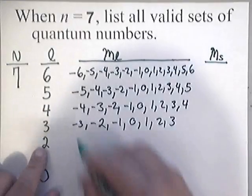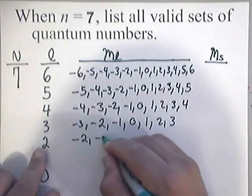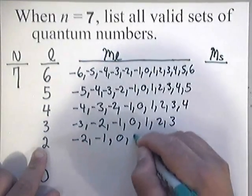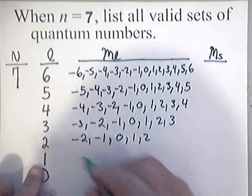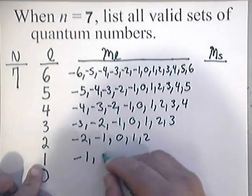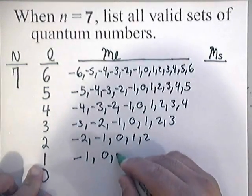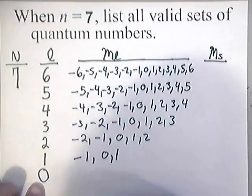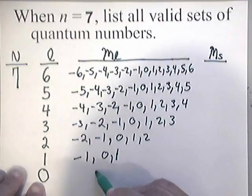This one, negative 2, negative 1, 0, 1, and 2. This one, negative 1, 0, and positive 1. And finally, last but not least, this one would be 0.